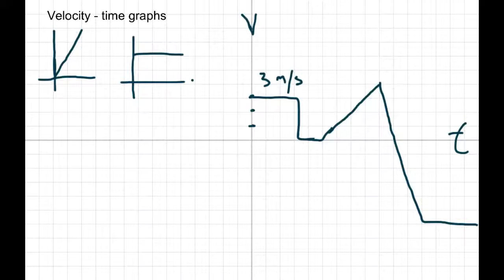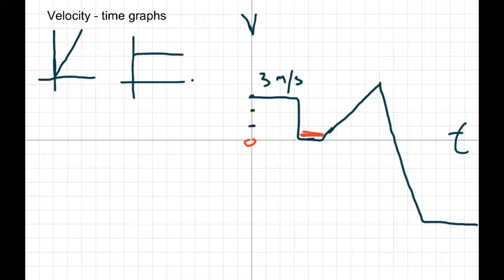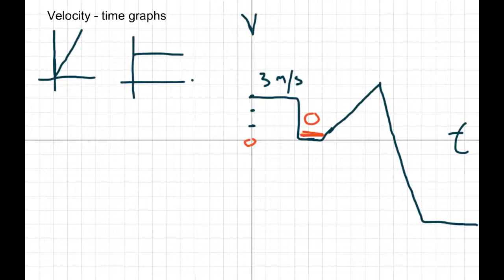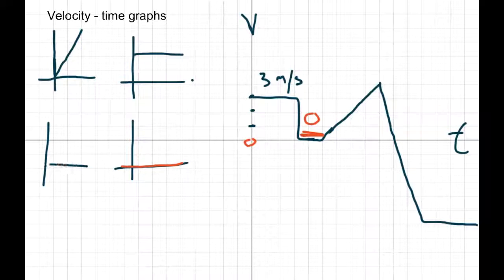If you think back to the old graph — on a distance-time graph, a velocity of 3 m/s was a diagonal line. On this velocity-time graph, a constant 3 m/s is now a flat horizontal line. That's a good way to compare the two. The next section is a flat part right on the zero line, meaning the object is stopped — zero speed. On a distance-time graph, zero velocity was a flat line at whatever distance we were at.